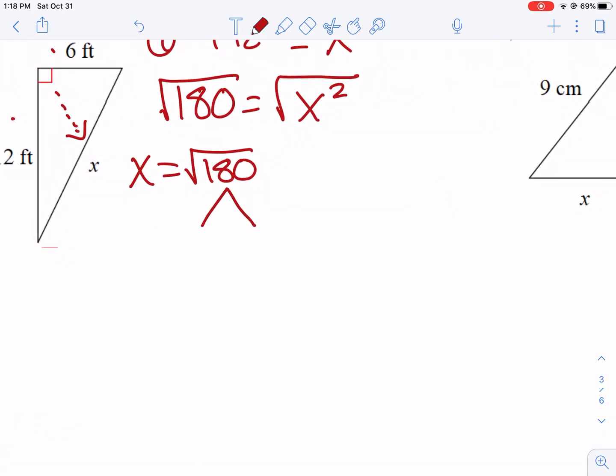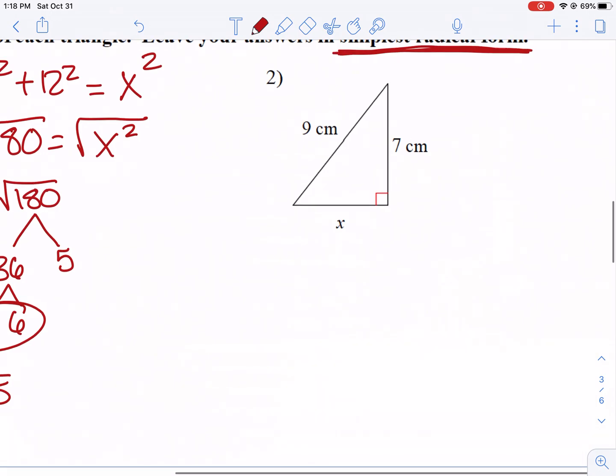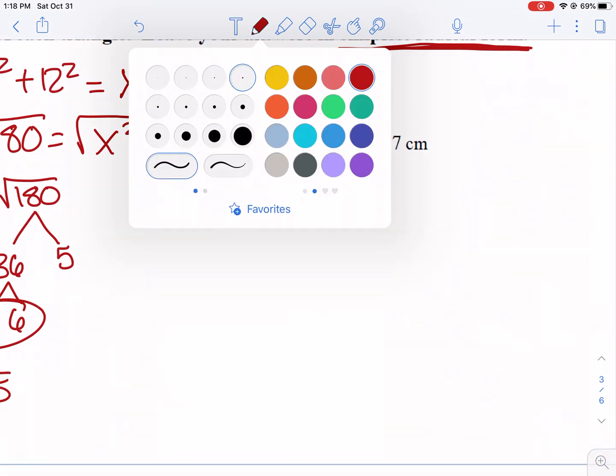So I found the perfect square that's in here is 36 and 5. So 36 breaks down into a pair of 6s. So x equals 6 square root 5. So that would be the length of our hypotenuse here. And remember, I wanted to leave it as an exact answer.